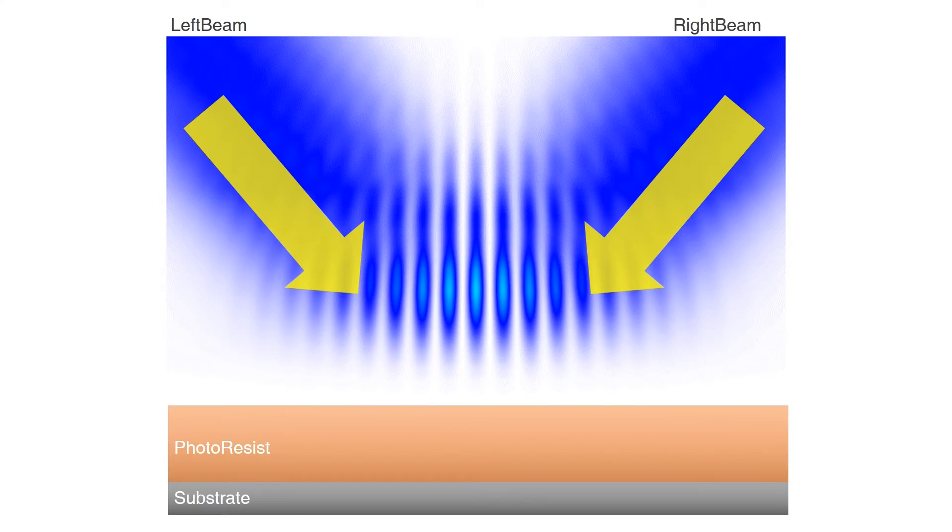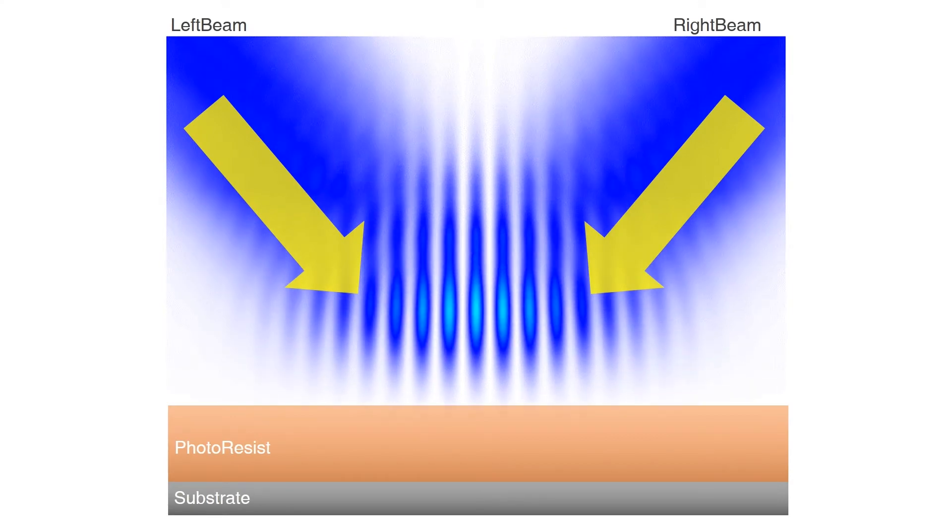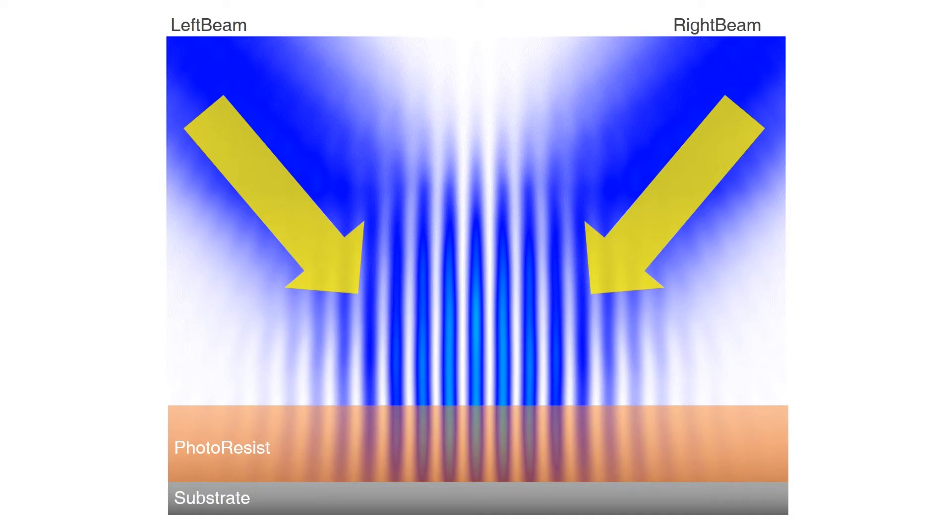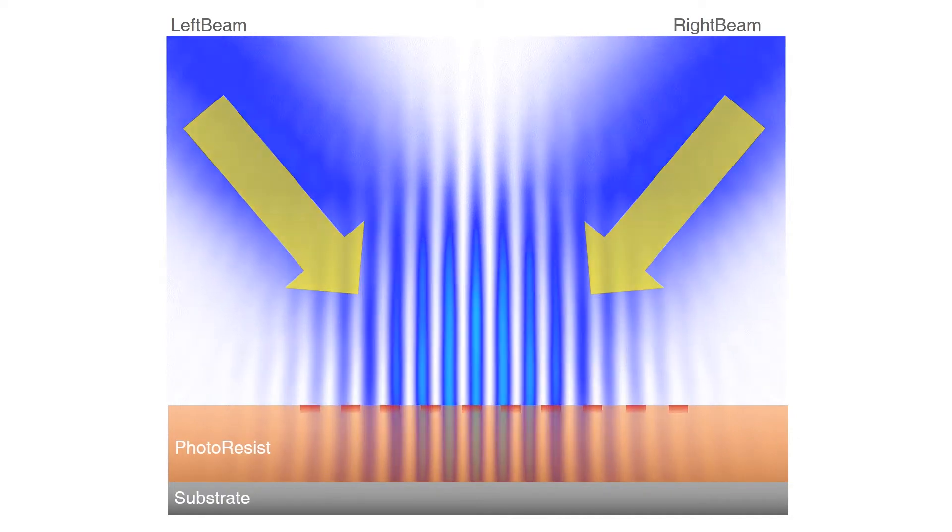Let me explain the principle of the interference lithography techniques. First, two beams propagate from a light source. Then, two beams make the interference pattern into the photoresist layer. After the development process, we get a micropatterning structure on the wafer.